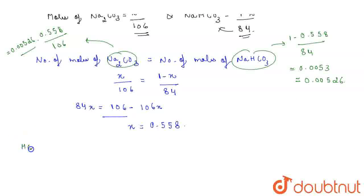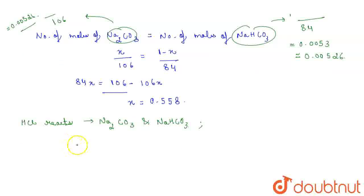Now, HCl reacts with Na2CO3 and NaHCO3 as follows. The reactions involved are Na2CO3 plus 2HCl gives 2NaCl plus H2O plus CO2. And when NaHCO3 reacts with HCl, it gives NaCl plus H2O plus CO2.